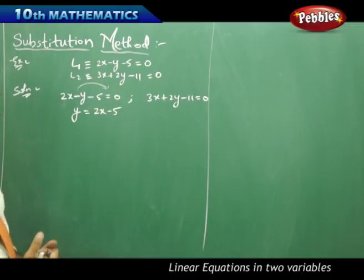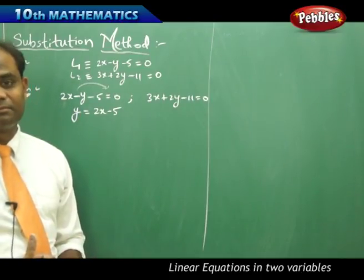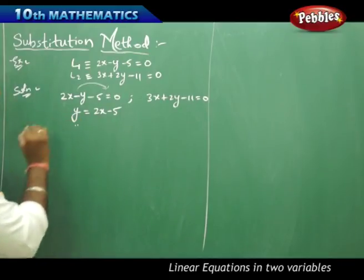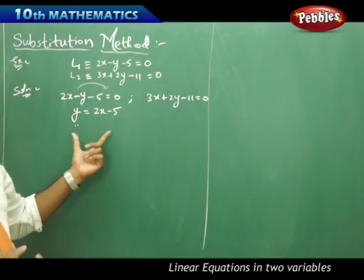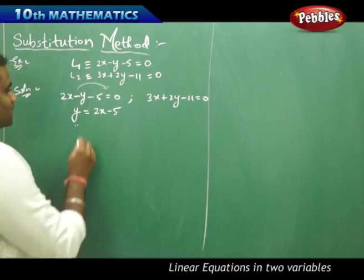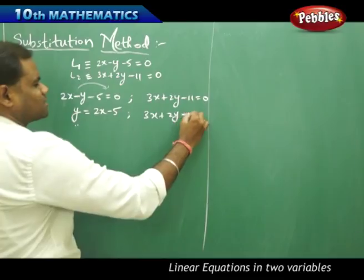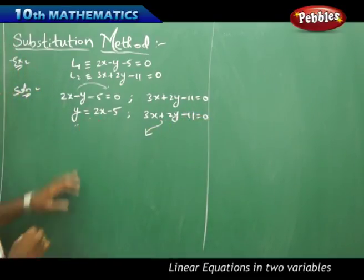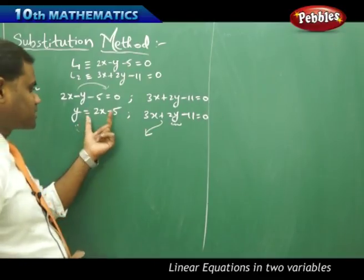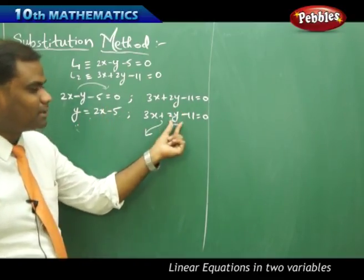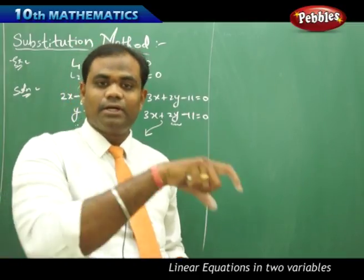In the substitution method, I always suggest choosing the variable whose coefficient is 1, as that will always be easier. Since the coefficient of y is 1, this is the most suitable variable to substitute into the other equation, making simplification easier. This is the rule one must follow in the substitution method. The y extracted from the first line is substituted into the second line — hence the method is called substitution.